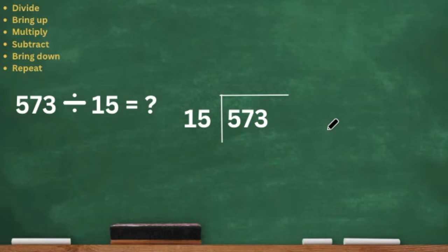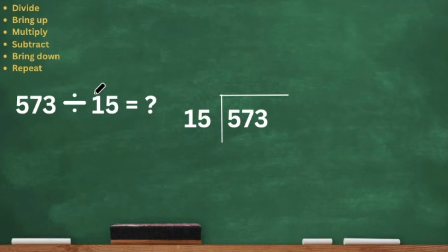We're going to try another one. We have 573 divided by 15. So look at this — our dividend is three digits like we had last time, but this time our divisor has two digits: 15. Last time it had one digit. It's the same process.